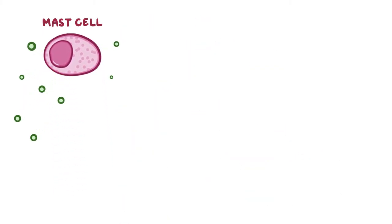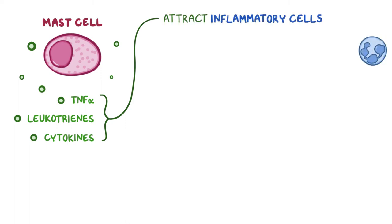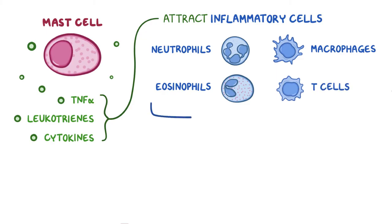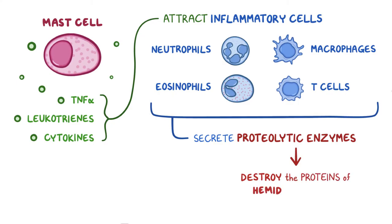The mast cells degranulate and release molecules like tumor necrosis factor alpha, leukotrienes, and cytokines. These molecules attract inflammatory cells like neutrophils, eosinophils, macrophages, and T cells. These inflammatory cells then secrete proteolytic enzymes, which destroy the proteins of hemidesmosomes, BPAG1 and BPAG2.